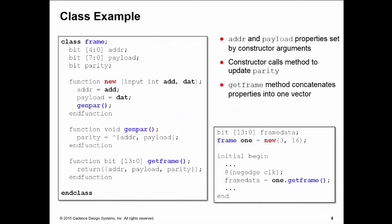We now know enough about classes to build our first class. This is a class called frame; it has address, payload, and parity properties. The address and payload properties are set by the constructor, so we pass in two arguments add and dat which we use to assign to our properties. The constructor also calls another method of the class genpar, which is used to update the parity property of the class. Once you've constructed it and passed in values for the address and payload, then the parity should be up to date with those values.